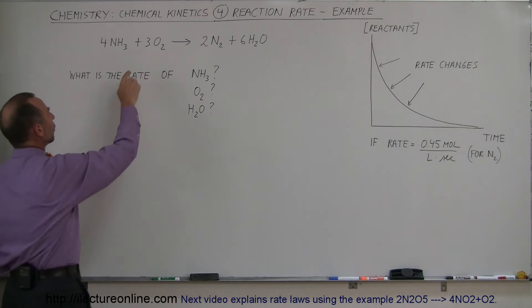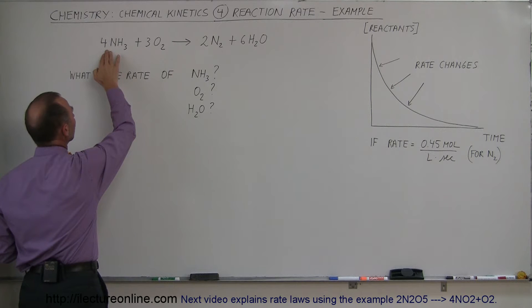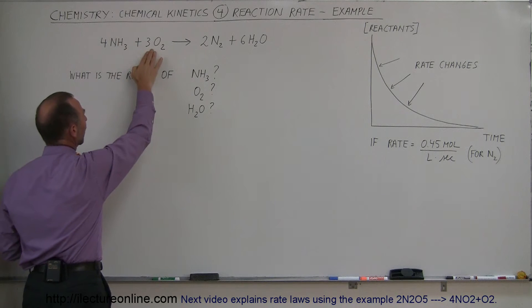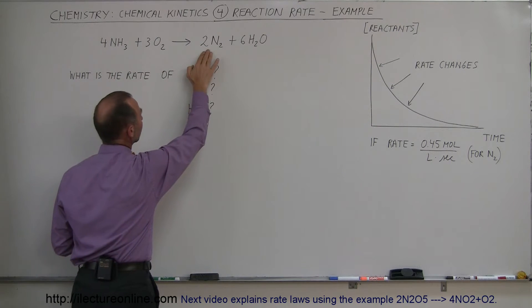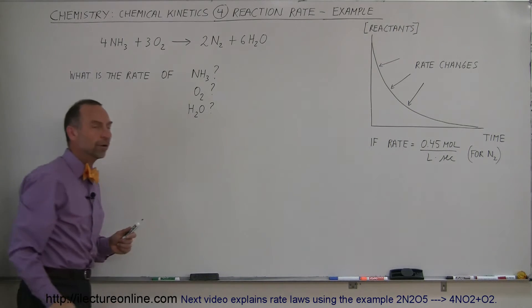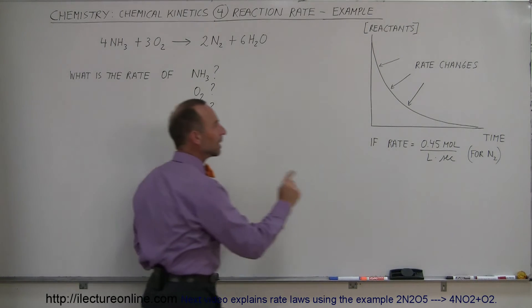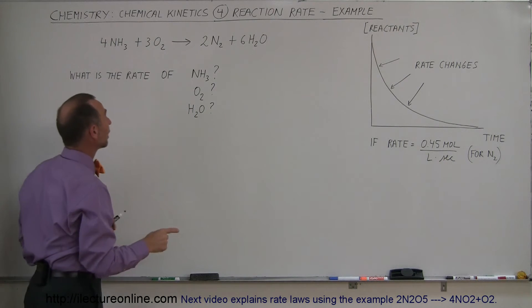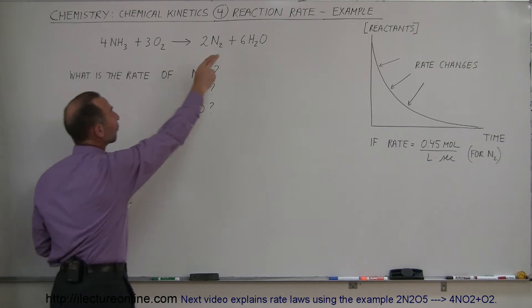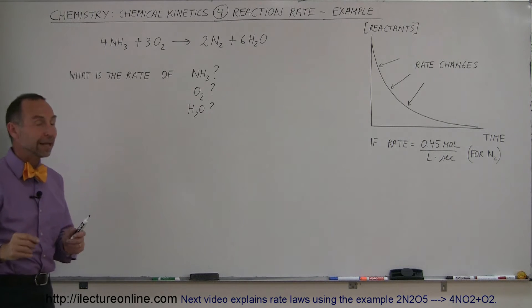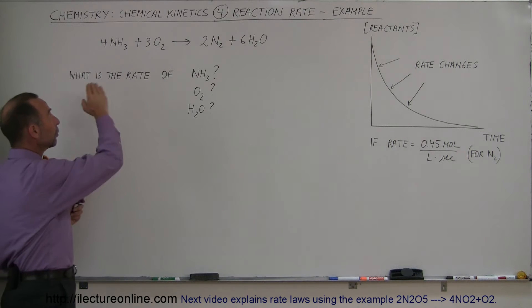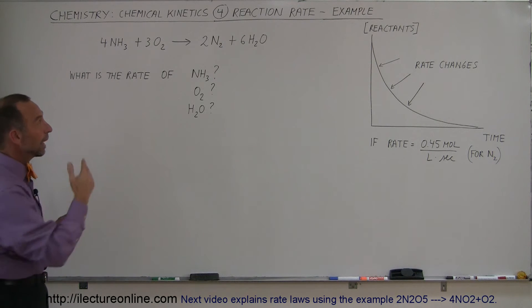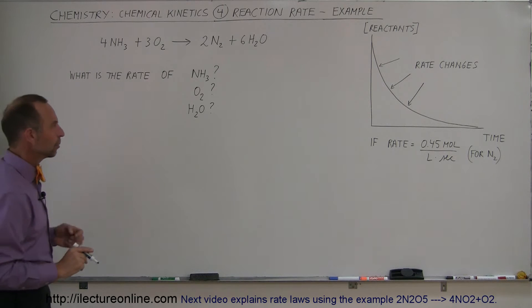Now also notice that we are consuming 4 moles of ammonia, 3 moles of oxygen gas to produce 2 moles of nitrogen gas and 6 moles of water. So if we know what the rate is for one of the products, can we find the reaction rate for the two reactants and for the other product? Yes, we can. It's simply going to be a ratio of the number of moles that are being consumed and the number of moles that are being produced.